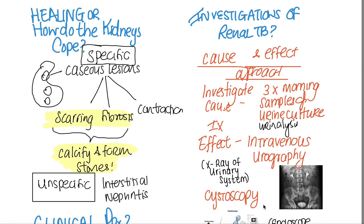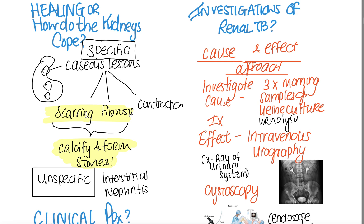Now let's cover the healing for the kidneys as well as the investigations. The kidneys heal in different ways. Always remember that there is an insulting factor and a protective factor. The insulting factor was the bacterium — the bacillus spreading throughout the blood. The protective factors are our own body's healing and scarring process as it scars, gets fibrosed, or contracts. The kidney can respond in three different ways: it can contract and shrink, get scarred over the lesions, or become fibrotic.